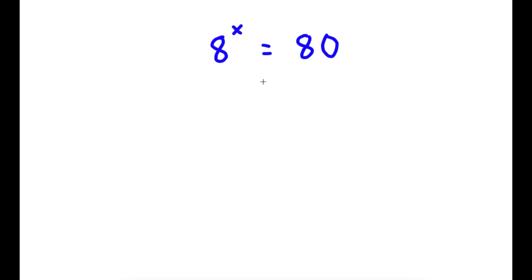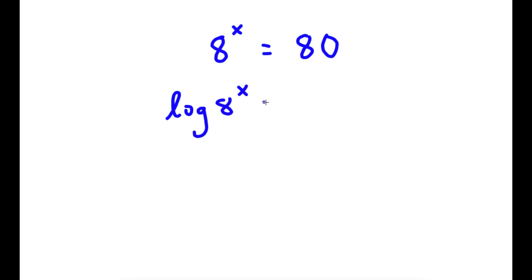In this problem, I have 8 to the power of x is equal to 80. To solve this, I'm going to first start by taking the log on both sides. So now I have log of 8 to the power of x is equal to log 80.